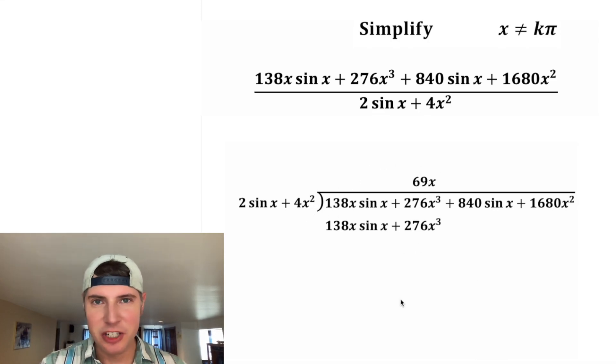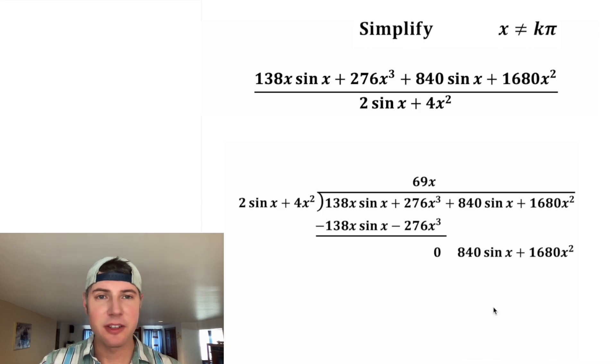The next step in long division is subtraction. We're going to do this minus this. And since they match, this is just going to give us 0. And then we can bring down the rest of the stuff.